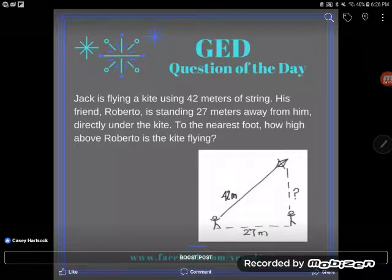Hey GED students, it's GED question of the day time and looks like we've got a geometry word problem, pretty typical. Let's take a look. Jack is flying a kite using 42 meters of string and they labeled it here for us.